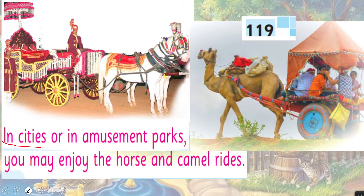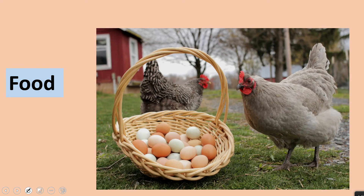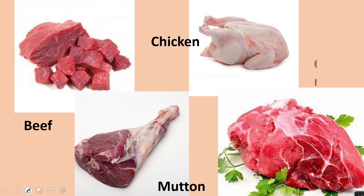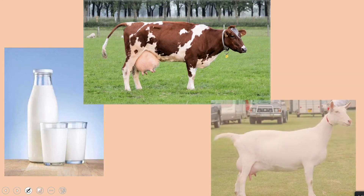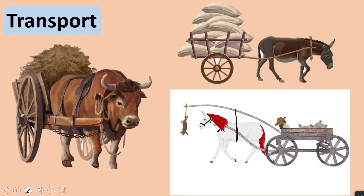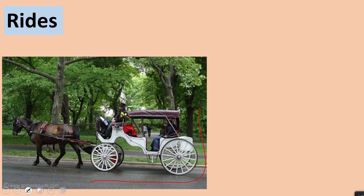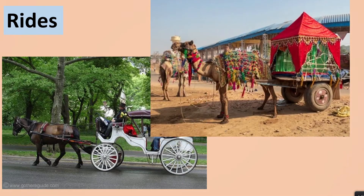In cities or in amusement parks, you may enjoy horse and camel rides. This is a horse ride and this is a camel ride. Animals provide us with food like eggs, meat, beef, mutton, chicken, and camel meat. They also provide us with milk, help us in transportation, and kids enjoy their rides — so they are also a part of our amusement.